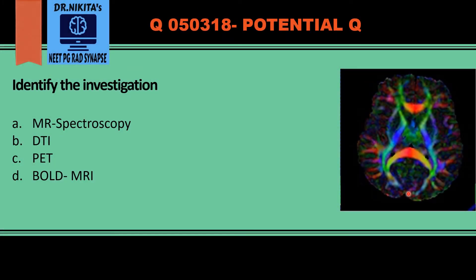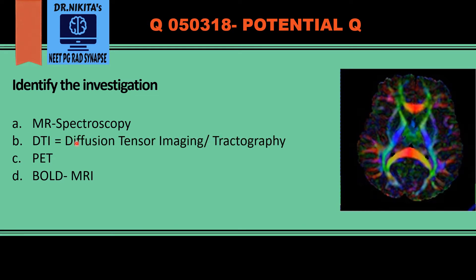In this image we have a colorful image — this is actually a DTI, the full form of which is diffusion tensor imaging, also called tractography. As the term suggests, tractography delineates the tracts, that is the white matter tracts. As we see in this image, the colored structures are the white matter tracts — the internal capsules and the corpus callosum.